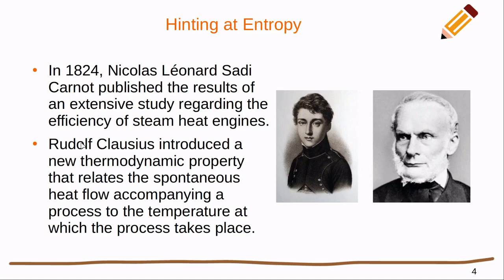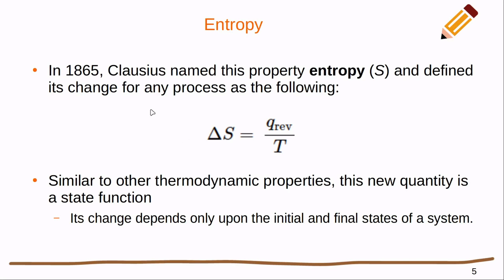Along came Rudolf Clausius who started looking at Carnot's work. He introduced a new thermodynamic property that relates the spontaneous heat flow accompanying a process to the temperature at which the process takes place. Clausius named his new property entropy, and he defined it where we have the heat that was done reversibly during the process divided by the temperature that that system is at. That is the change in entropy.